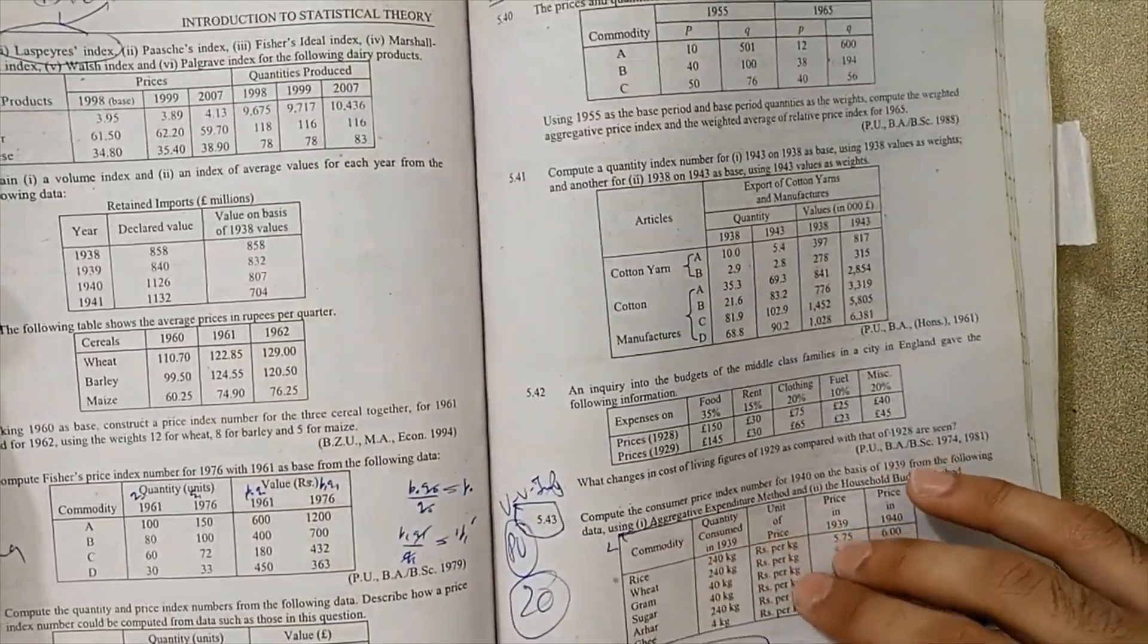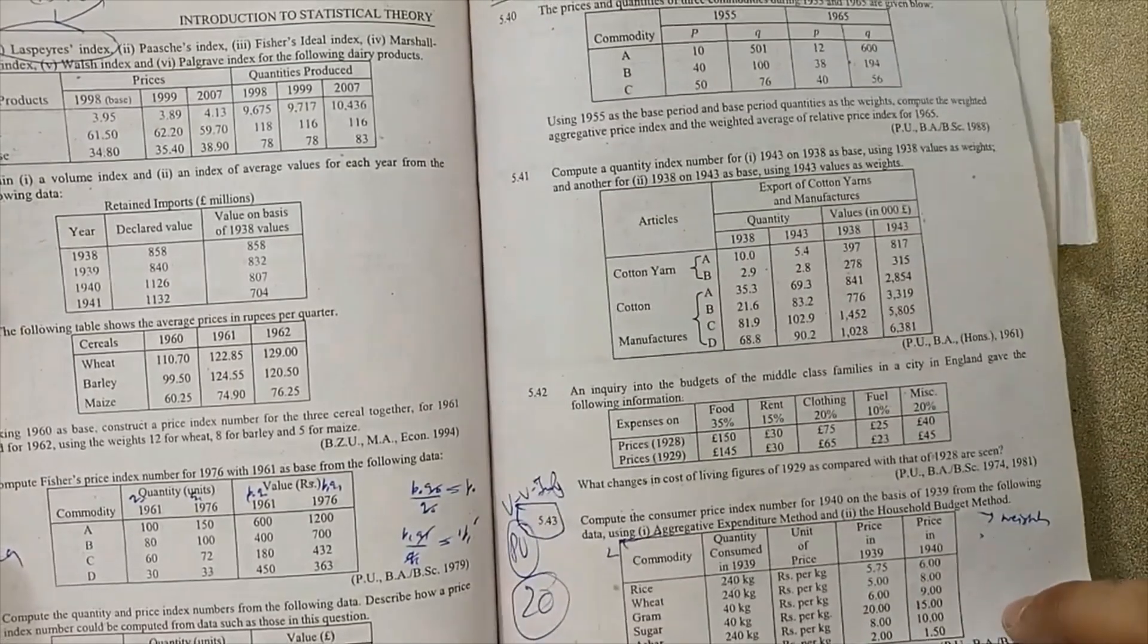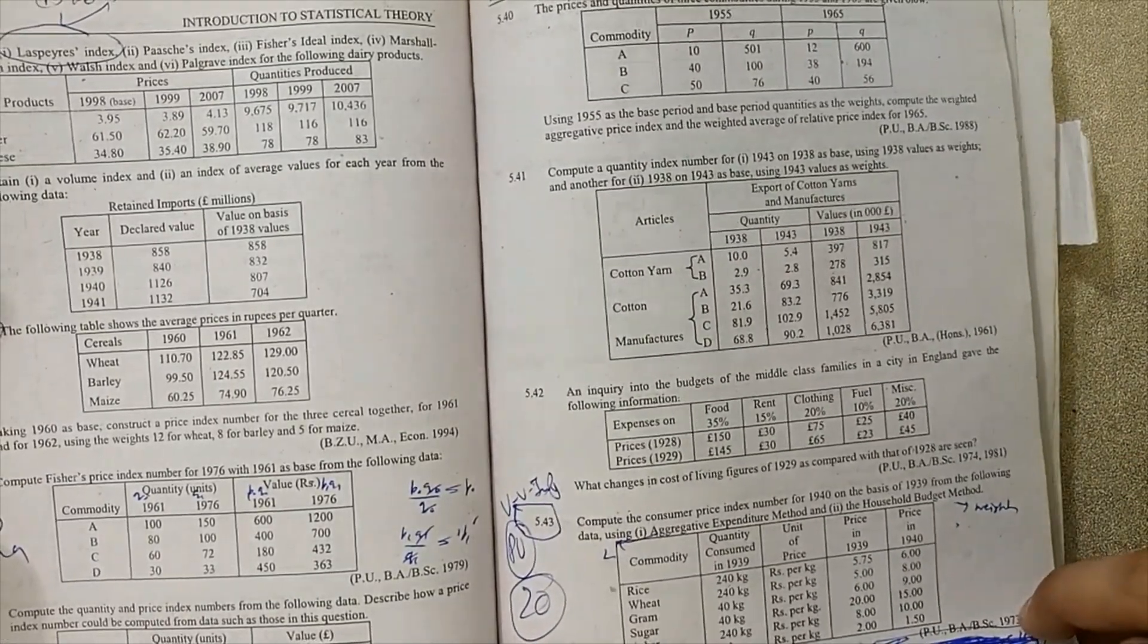5.37 is very important, 5.38, and last 5.43 question is most important for exams.